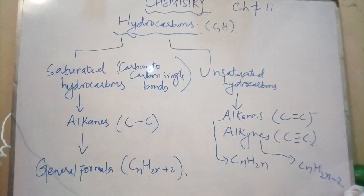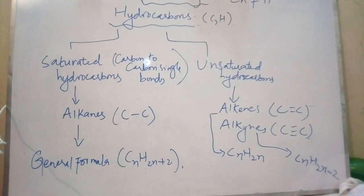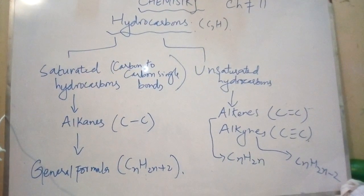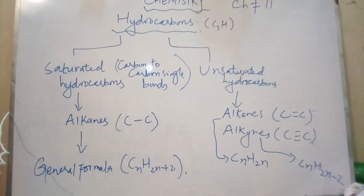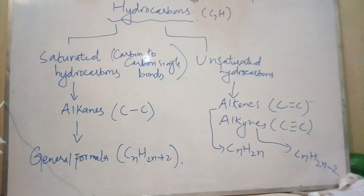When we put different n values, we get different series of hydrocarbons. Now we will study them in detail one by one, how we put n values to get different alkanes, alkenes, and alkynes.